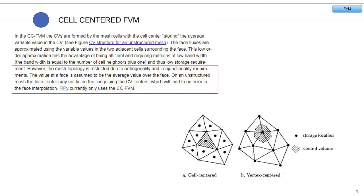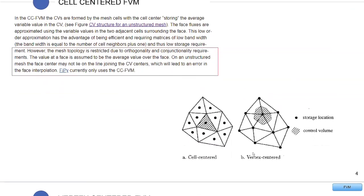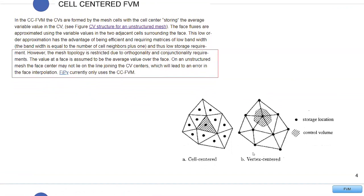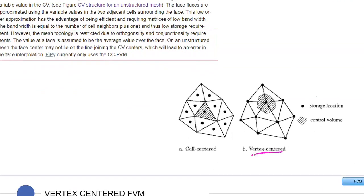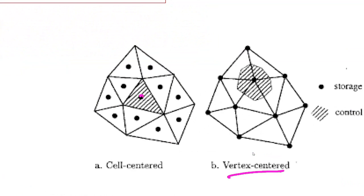One student question was: when is it best to use vertex-centered versus cell-centered, and what's the difference? For the cell-centered approach, the average value is calculated within the specific cell — the black dot in the middle of each element. When we move to another phase or element, the variable is calculated at the center of that specific cell or element.